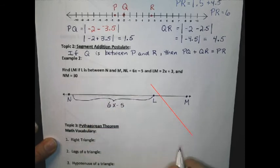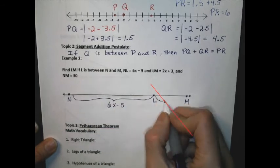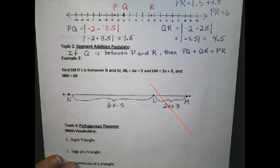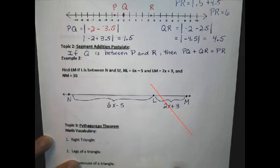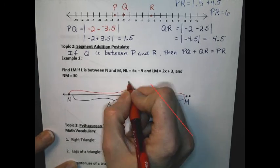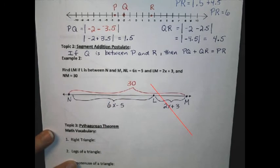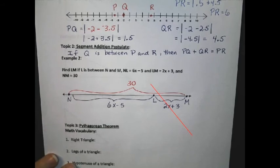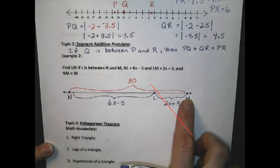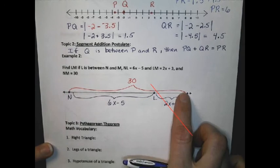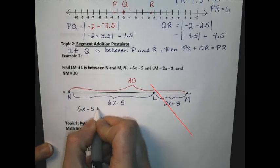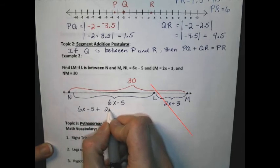And the distance LM is 2x plus 3. We also know that NM equals 30. That means it is the distance from N to M, and it is 30. I can use the addition postulate in several different ways. For a problem like this, what I would do is I would say that NL plus LM equals NM. So in setting that up, I will have 6x minus 5 plus LM, which is 2x plus 3, equal to 30.